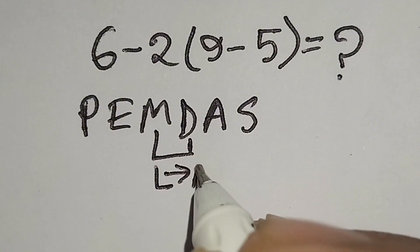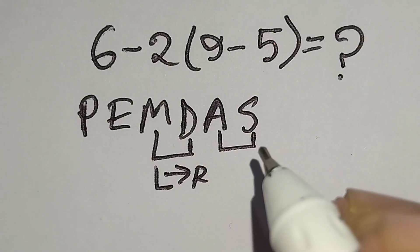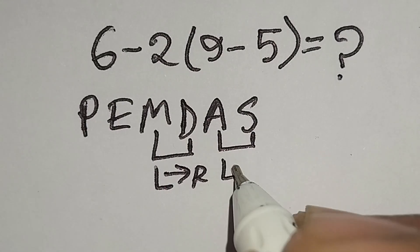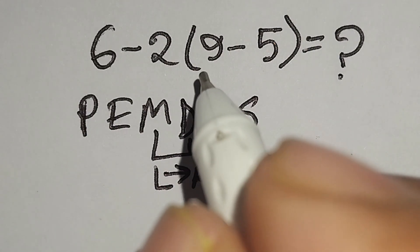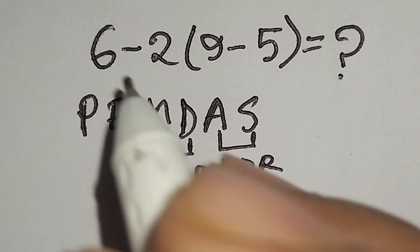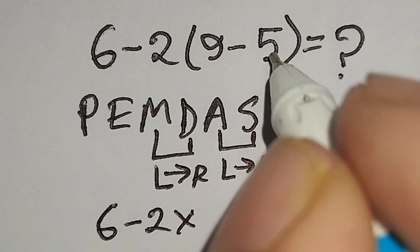Addition and subtraction have same priority. For this we have to work left to right also. Now I have to work with this parenthesis first. Here, 6 - 2 multiply this. 9 - 5 gives us 4.